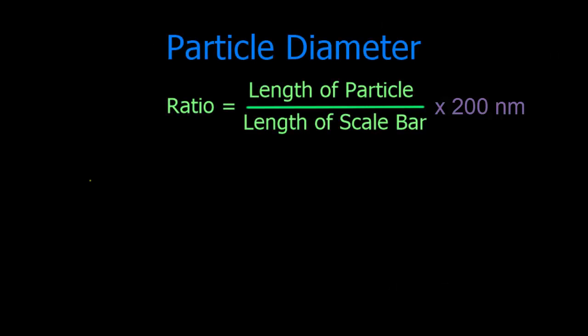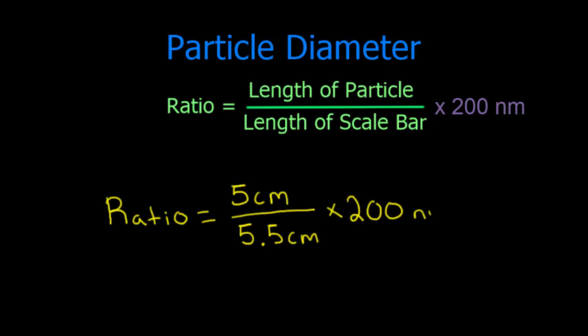Divide the length of the particle by the length of the scale bar in order to obtain a ratio. Multiply this ratio by 200 nanometers in order to determine the diameter of the particle in nanometers. In our example, 5 divided by 5.5 equals 0.9. When multiplied by 200, this equates to a particle diameter of about 180 nanometers.